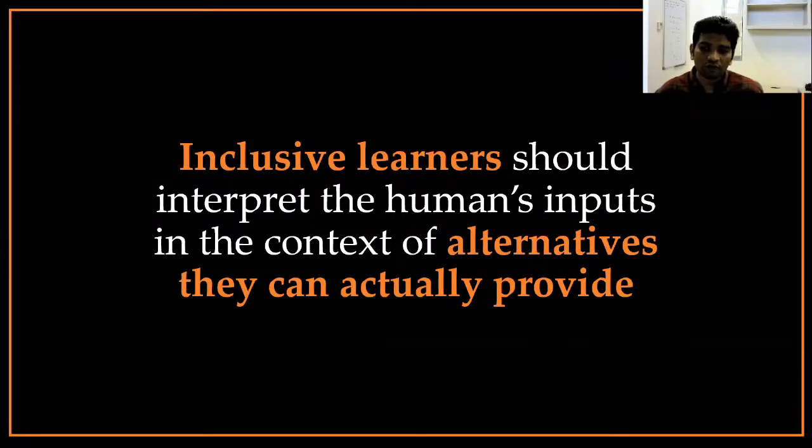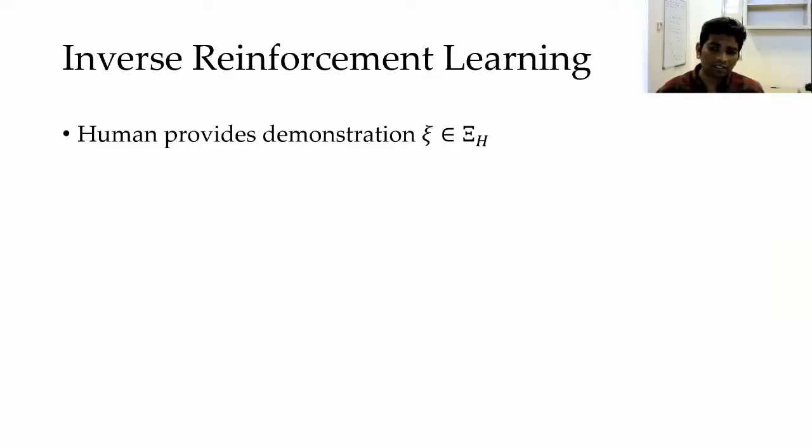Through this work, what we found was that robots that want to be inclusive must evaluate the human's inputs in the context of alternatives they can actually provide. To understand what I mean, let's take a look at how this problem is generally formulated.